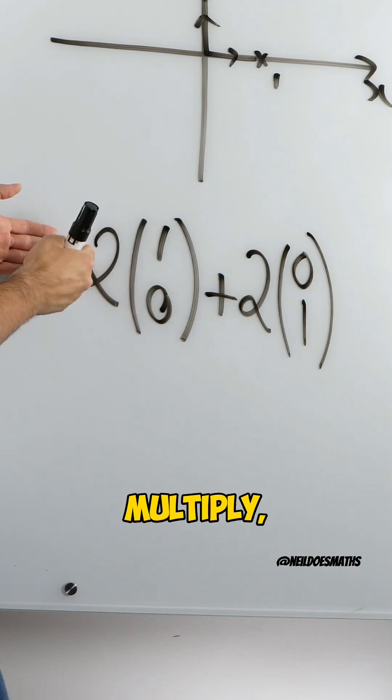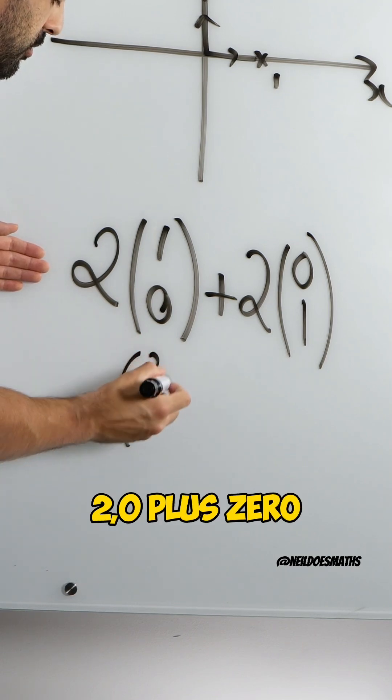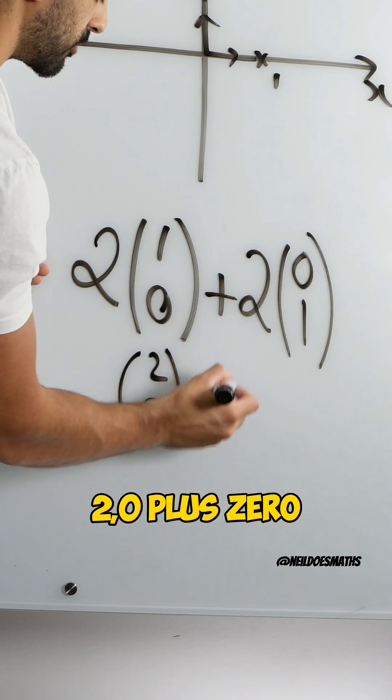When you multiply, you multiply the top and the bottom value. So we would have 2, 0, plus 0, 2.